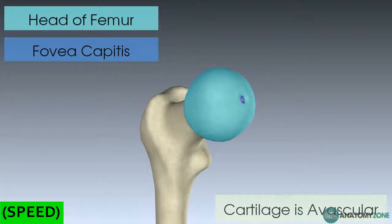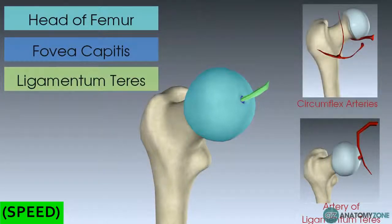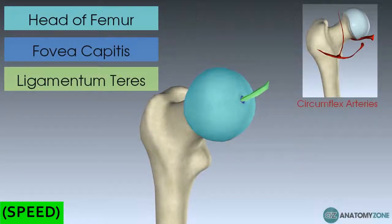Arteries supplying the head of the femur come through the ligamentum teres via a branch of the obturator artery, and the neck of the femur is supplied by the circumflex arteries off the femoral artery. When you reach adulthood and growth plates fuse, the artery through the ligamentum teres obliterates, and all blood supply to the neck and head is then supplied by the circumflex arteries — which has important clinical consequences if you were to have a fractured neck of the femur.